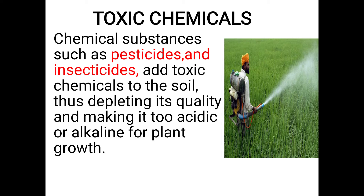Then toxic chemicals — chemicals could be a poison material. A chemical substance such as a pesticide and insecticide is a toxic chemical. This can make the soil acidic and alkaline, affecting plant growth. As a result, plants that used to grow well can be killed.